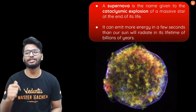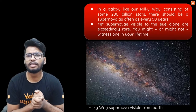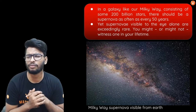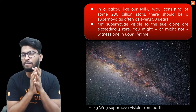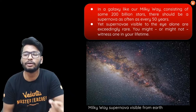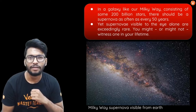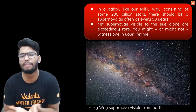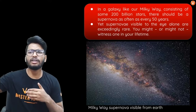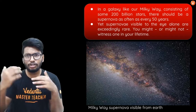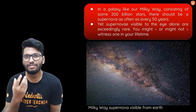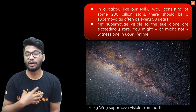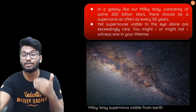Our galaxy, the Milky Way, contains over 200 billion stars. Mathematically speaking, we should be able to see at least one supernova every 50 odd years. Because out of 200 billion stars, a large portion would be massive stars, and when they eventually die they should go through the supernova stage. However, the number of supernovas visible to us is far, far lesser — in fact, we could pass our entire lifetime and never see a supernova. It's a very rare phenomenon.